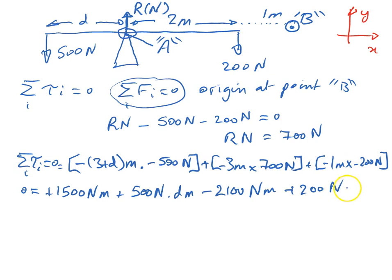So, collecting terms together, we have minus 2100 plus 200 is minus 19 plus 15 is minus 400 newtons meters. So, we have a total of minus 400 newtons meters. That's that term and that term and that term taken into account.